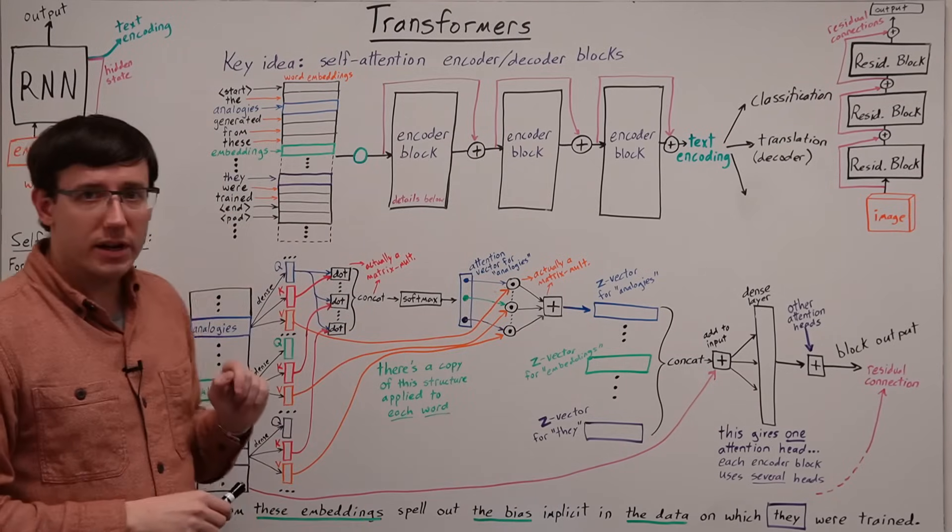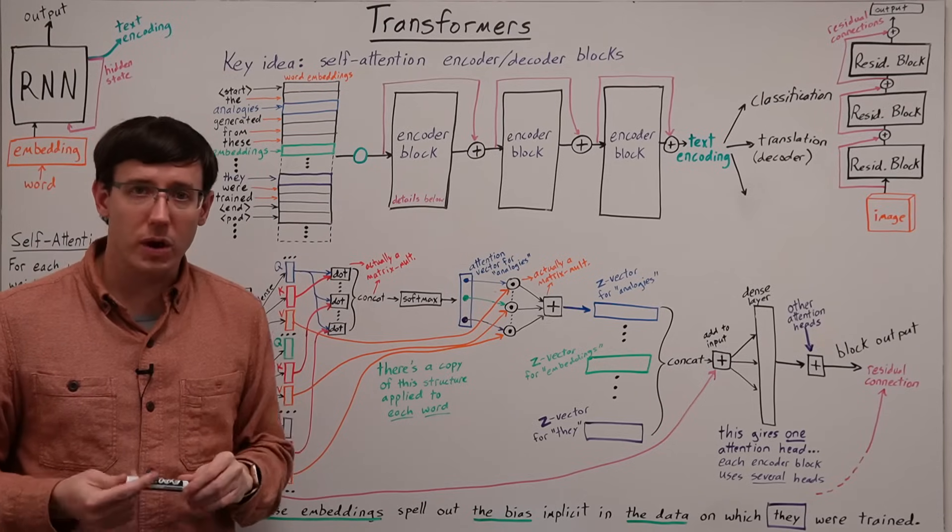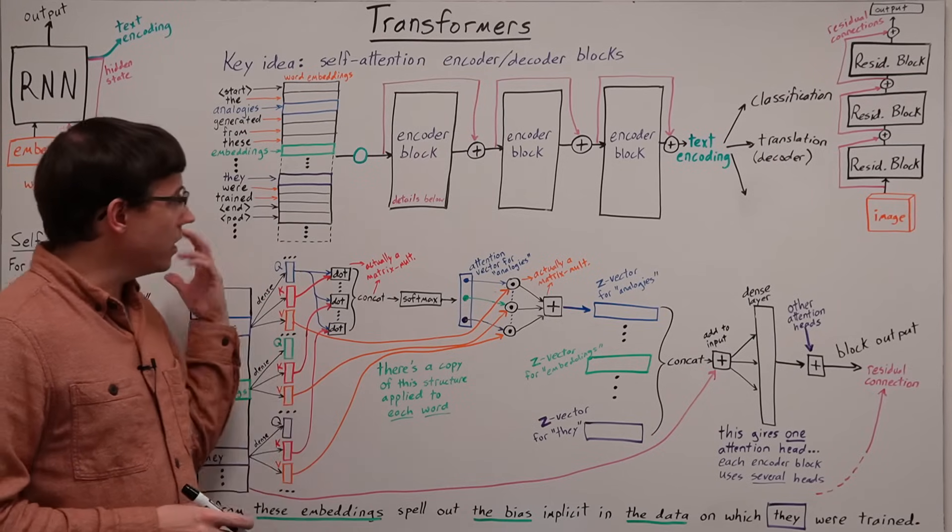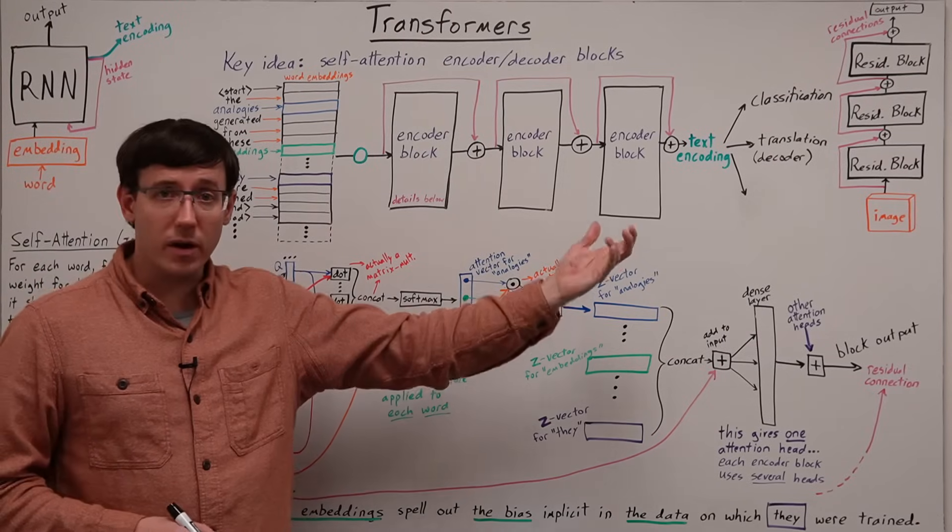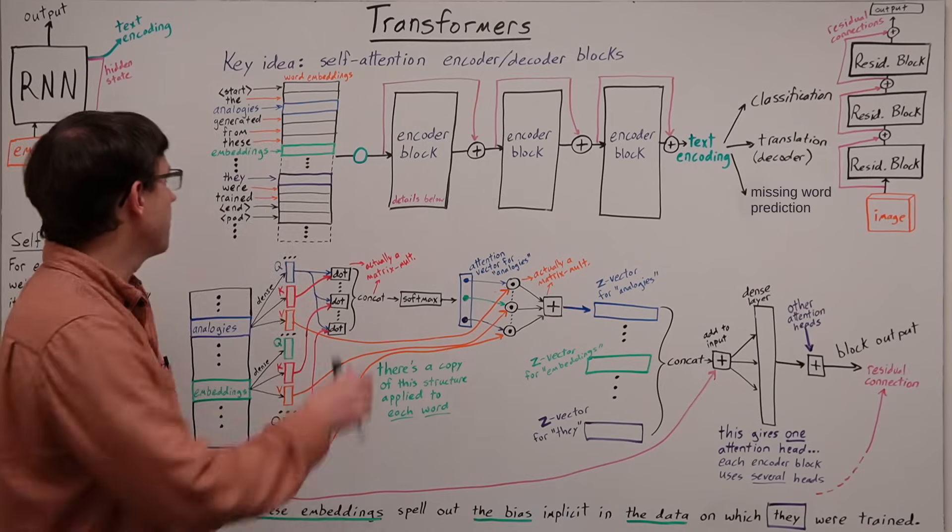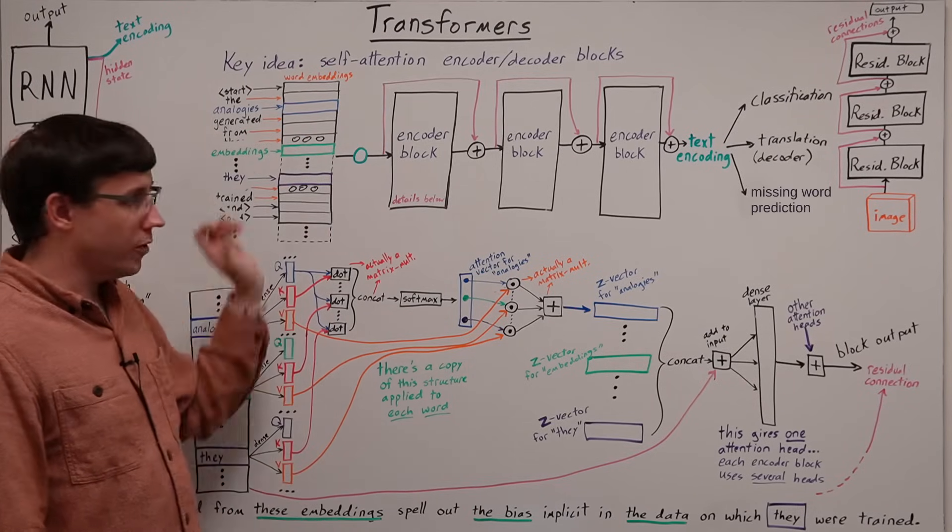Only with a transformer, we can't ask it to predict the next word, because it sees the whole input at once. And the solution here is to train the network on documents where some of the words have been randomly blanked out.